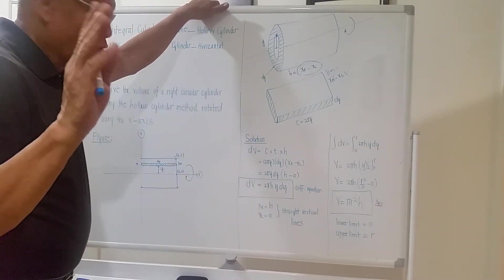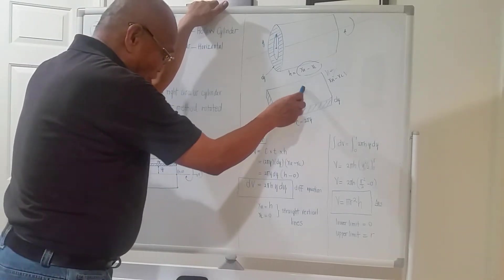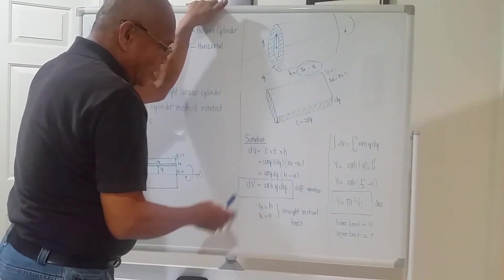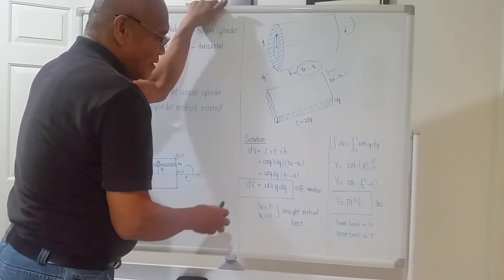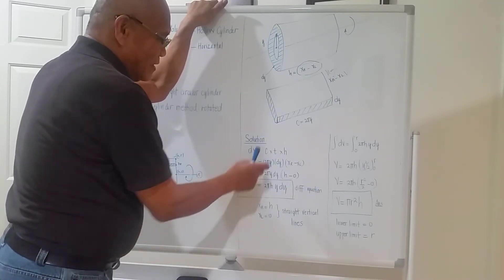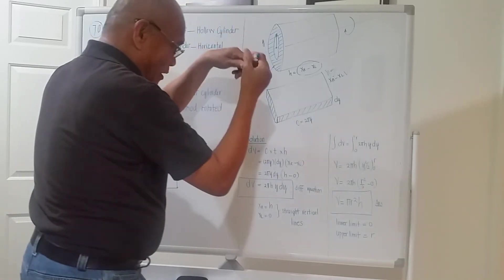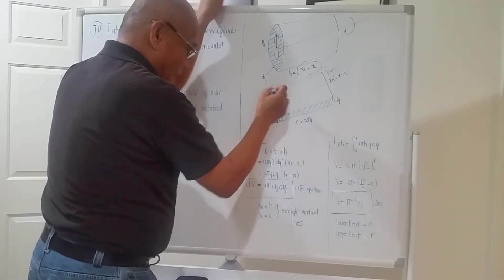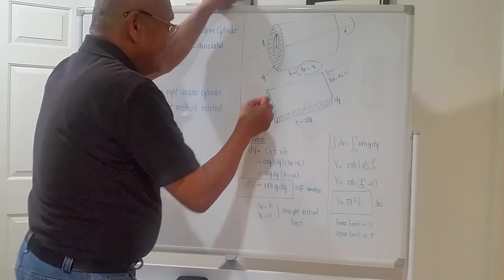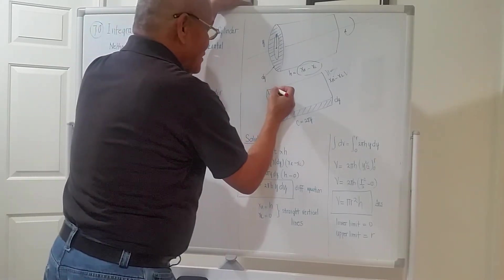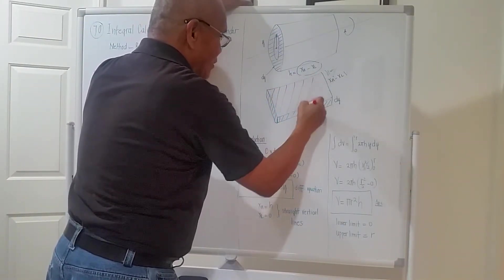We now try to set up the differential volume. The differential volume will be circumference times thickness times height. I will try to cross-hatch the area when we try to spread it out.